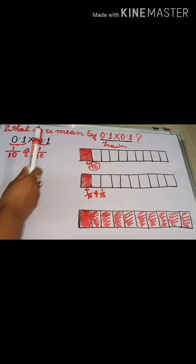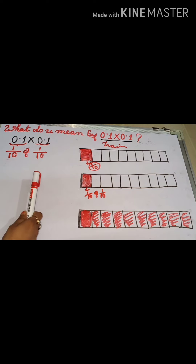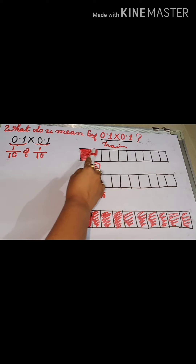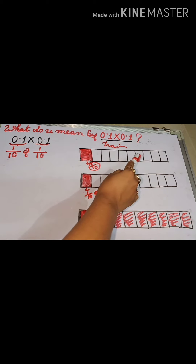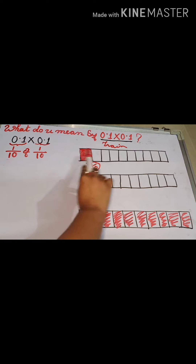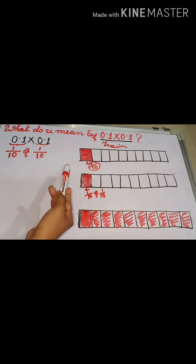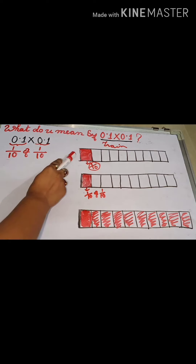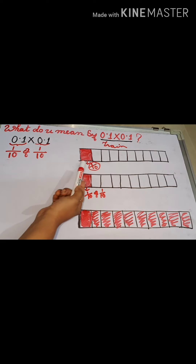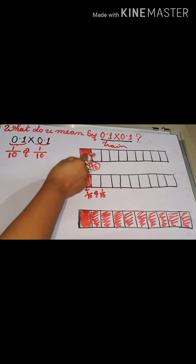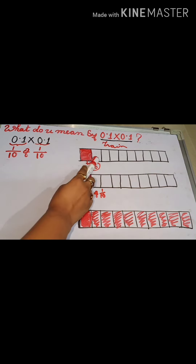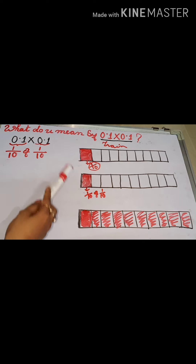Suppose you have a train with 10 compartments. One compartment out of those 10 compartments is colored — that means it is 1/10. You know this concept from the fractions chapter. From the 10 compartments, one compartment is colored, so that colored region signifies 1/10.